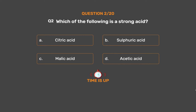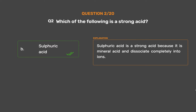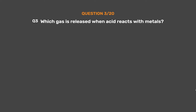The correct answer is Option B: Sulfuric acid. Sulfuric acid is a strong acid because it is a mineral acid and dissociates completely into ions.